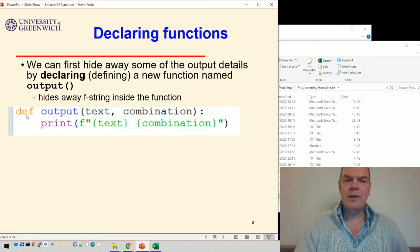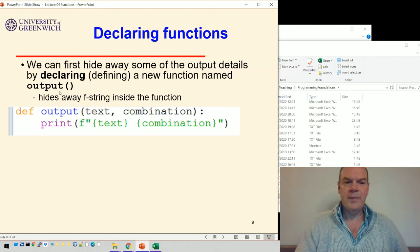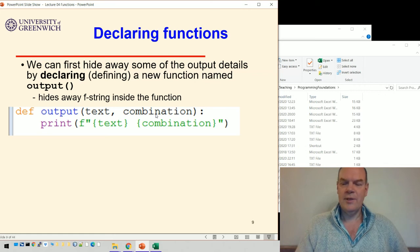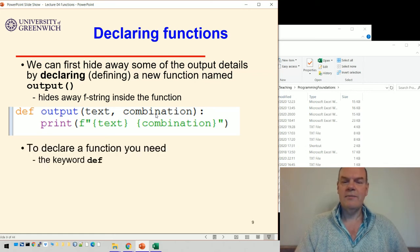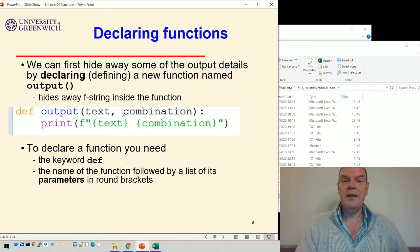The way to do that is use this keyword called def, which stands for define. We're declaring this function or defining it. Python uses def to define the function. The function is called output, and this text and combination are things we give to the function to do its job. In general, to declare a function you need the keyword def, the name of the function, here output, followed by its parameters in round brackets.